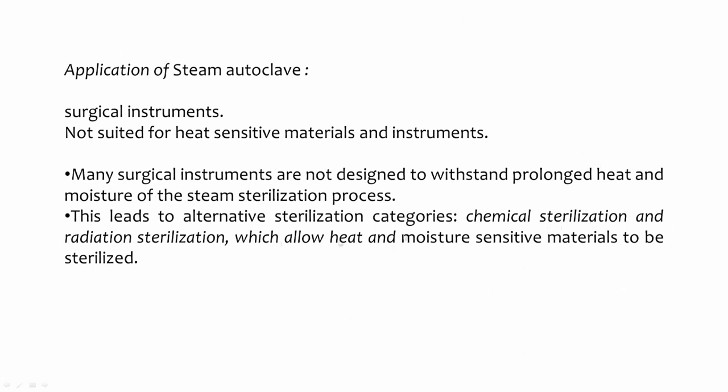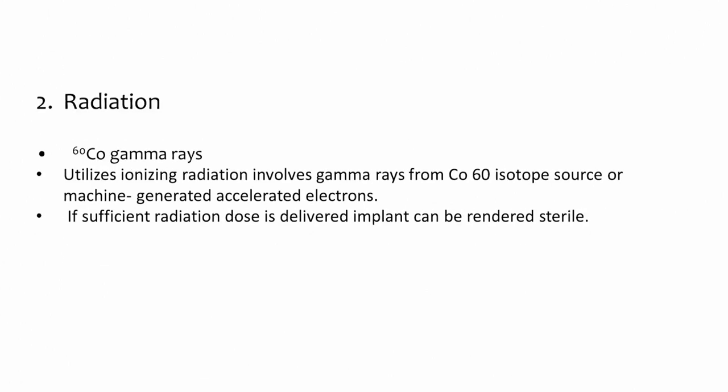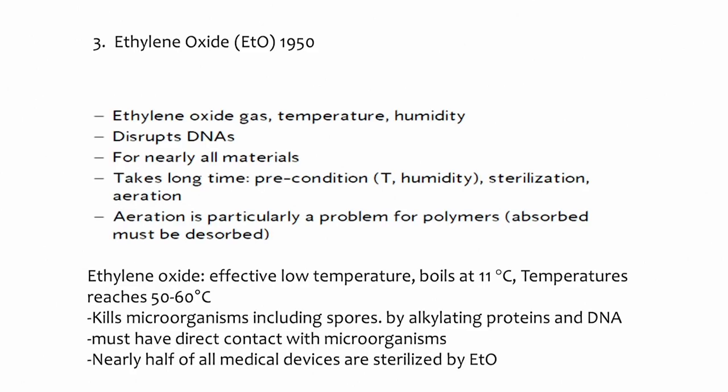For heat-sensitive or moisture-sensitive materials, we may use chemical or radiation sterilization, which are slightly more expensive. Radiation sterilization uses cobalt-60 gamma rays, producing ionizing radiation from the cobalt-60 isotope source. A sufficient dose is focused on the material to render it sterile — that is the radiation approach.